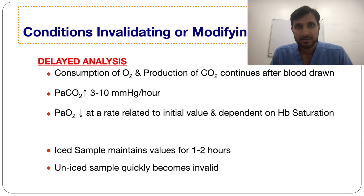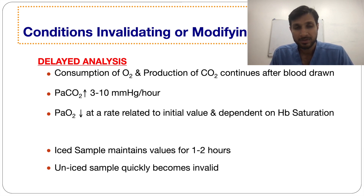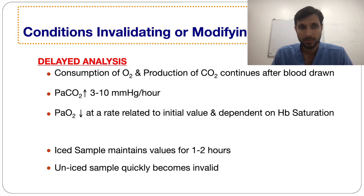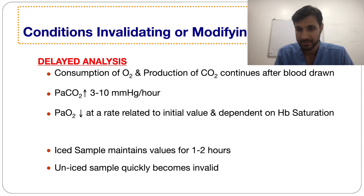There are some conditions that may modify ABG results and invalidate them. Delayed analysis: if we draw the blood and wait before doing the ABG, there may be consumption of oxygen so that PO2 will be low and PCO2 will be high. It is better to store the sample on ice, where it can be stored for 1-2 hours before analysis.